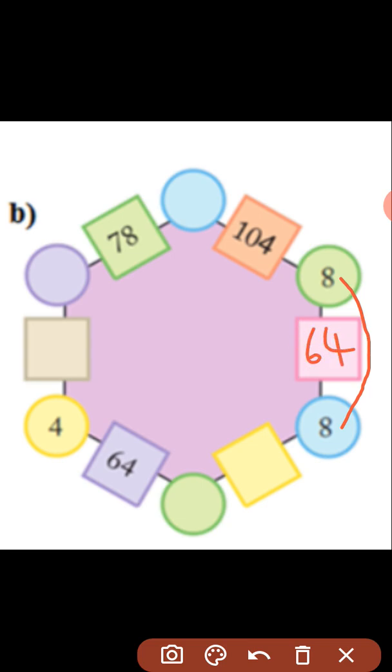The next one the product is there but the other number is missing. So what you have to do is 104 you divide by 8. When you divide 104 by 8 you are getting the answer is 13. That should be written here. Now you can check 13 into 8 you are getting 104.